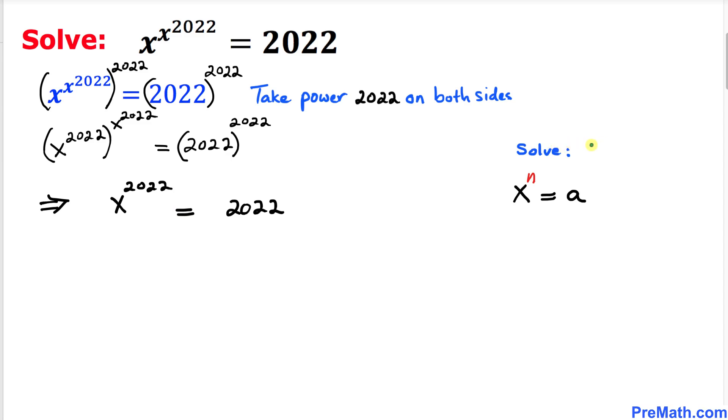Here we have x power n equals a, and we want to solve for x. Now we are going to take the nth root. In other words, this is called index, which is simply n.